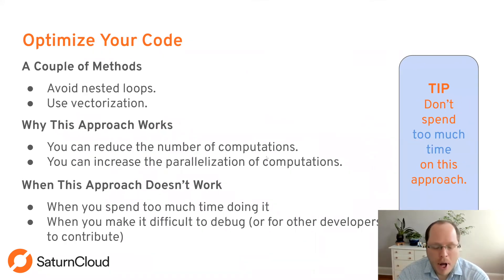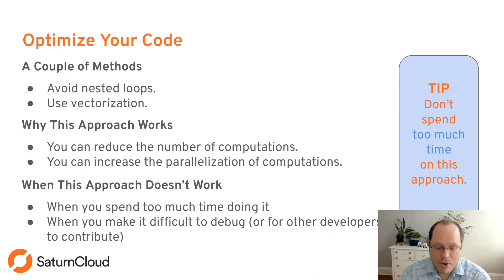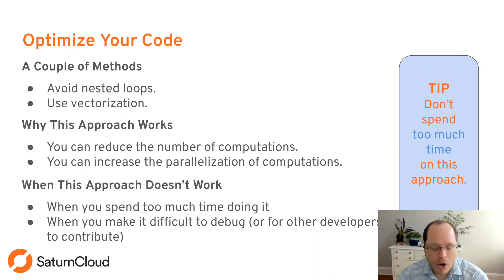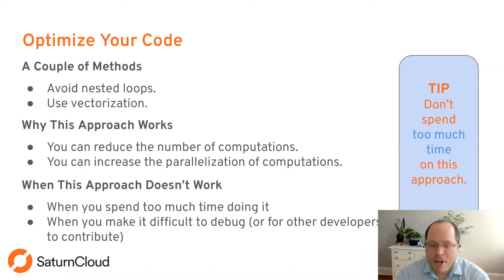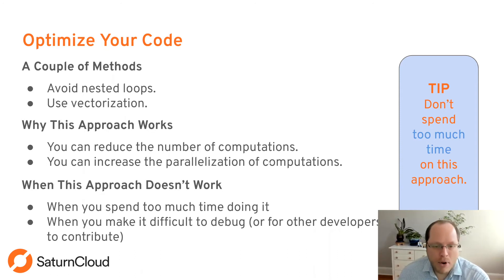The first speed option is optimizing your code, though I wouldn't spend too much time here. Premature optimization is not a great idea — usually you can spend your time more efficiently adding tests or making code more readable. Key practices include avoiding nested loops and using vectorization when possible. This reduces computations or increases parallelization, but over-optimizing can make code harder to debug or for other developers to contribute. Use this sparingly and only when necessary.